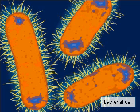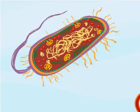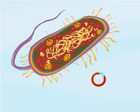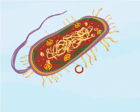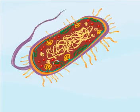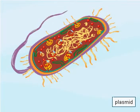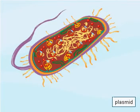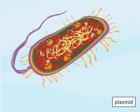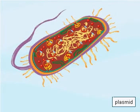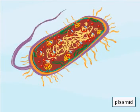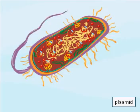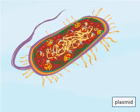Bacterial cells are perfect hosts for cloning genes. Plasmids are natural vectors and are the means by which a new gene can be introduced into a bacterial cell. Plasmids are circular DNA molecules that occur in the cytoplasm of bacterial cells and have the ability to replicate independently of the bacterial chromosome.